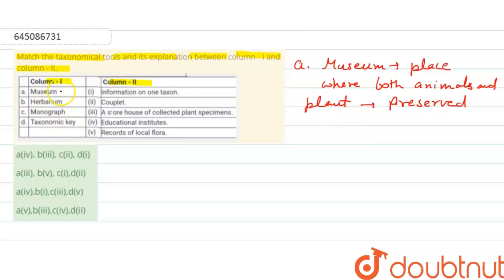Here, option A matches with the third option. That is option B. Next is the B option, herbarium.